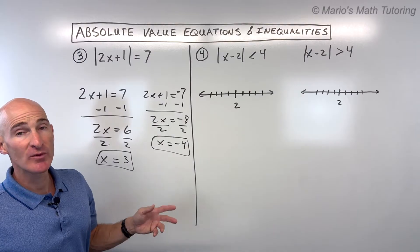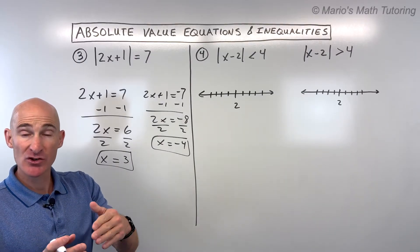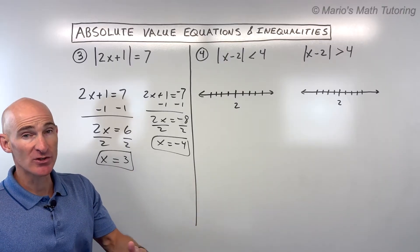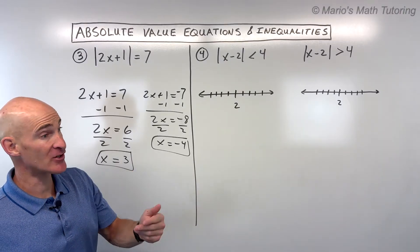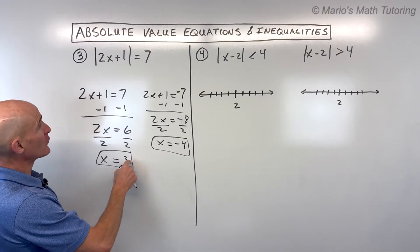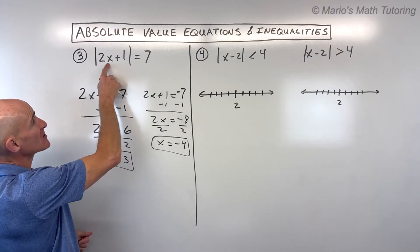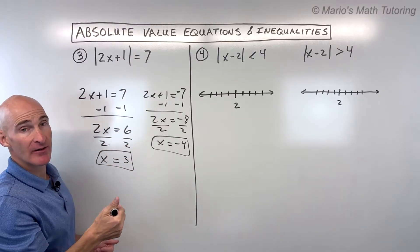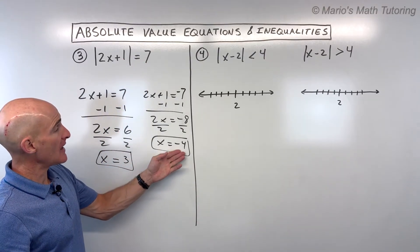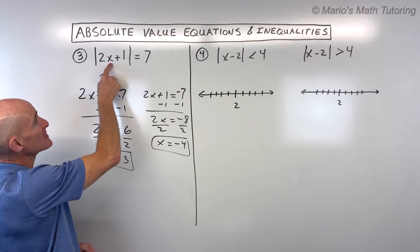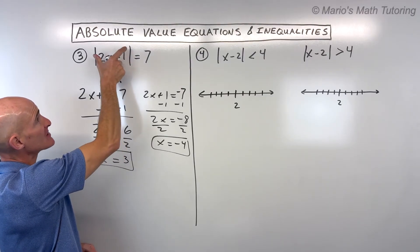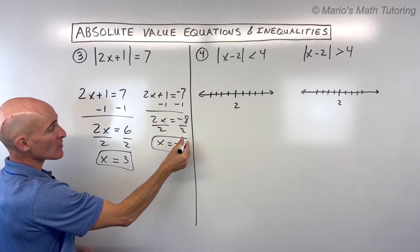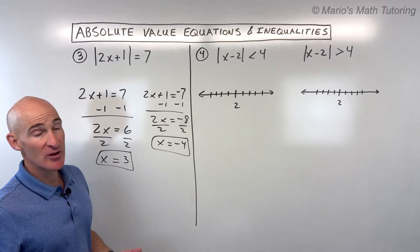It's good to check your answer because with absolute value problems you can sometimes get a false answer called an extraneous root. Plugging in x = 3: two times three is six plus one is seven, and the absolute value of positive seven yields seven — good solution. For x = −4: two times negative four is negative eight, plus one is negative seven, and the absolute value of negative seven gives positive seven. Both solutions are valid.